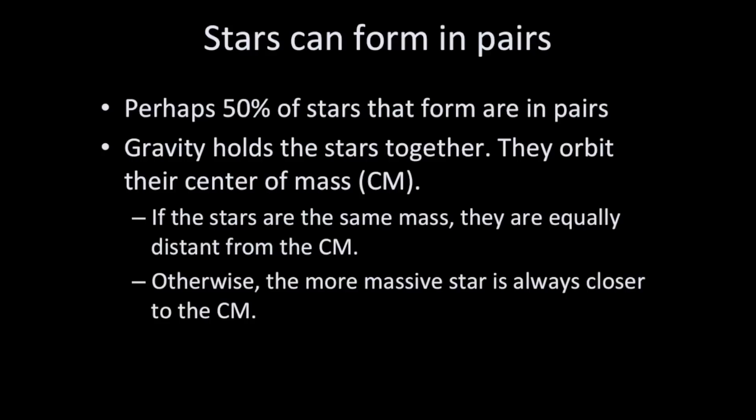It turns out that perhaps 50 percent of stars that form come in pairs, and gravity holds these stars together. As they orbit, they orbit something called their center of mass. We'll talk about center of mass in another lecture.